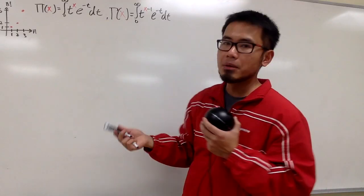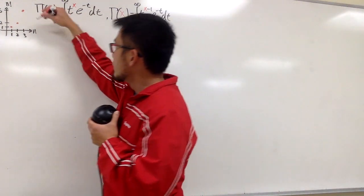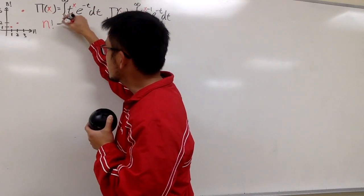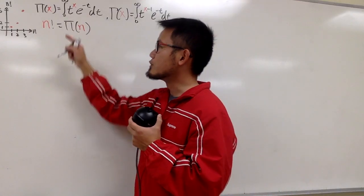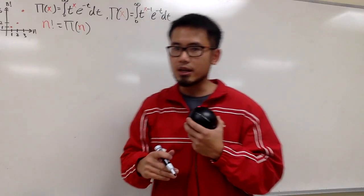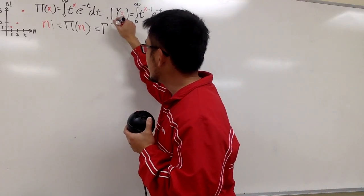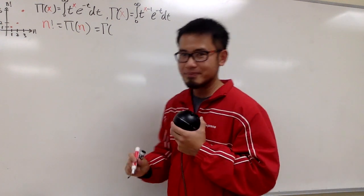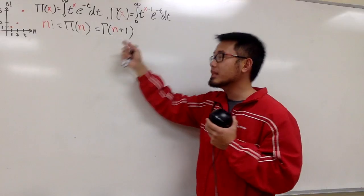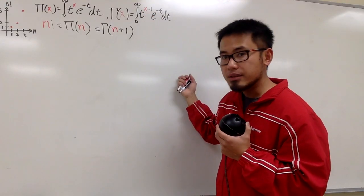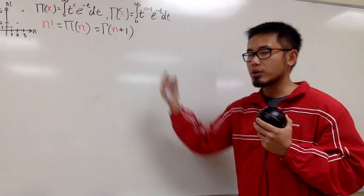The only difference between the π function and the γ function is just the exponent, so they are really similar. We know that n factorial is exactly π of n. And for γ function fans, n factorial is the same as γ of n+1, because you plug in n+1 into x, so n+1 minus 1 is just n for the power. So all of these are equivalent.